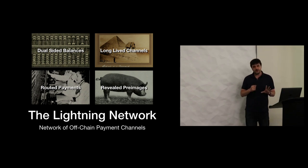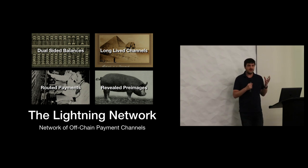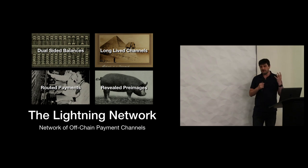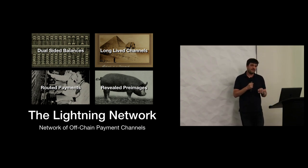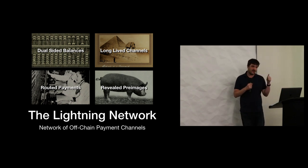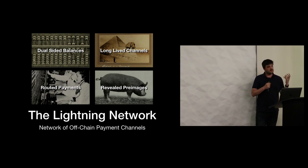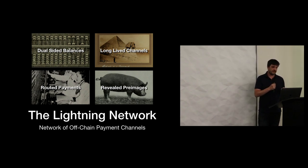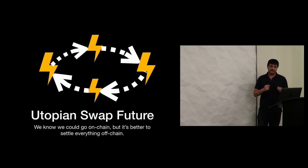Every time you get an invoice from a merchant, they sign a statement saying what you're paying for. Inside this invoice is a hash which corresponds to that HTLC hash. When you pay the invoice, you get a pre-image, and the pre-image proves that you paid that invoice. That's a super important part of Lightning when it comes to swaps.